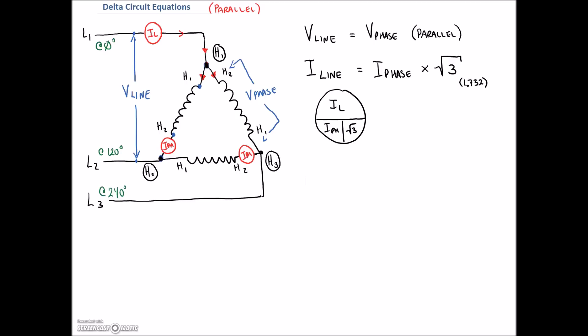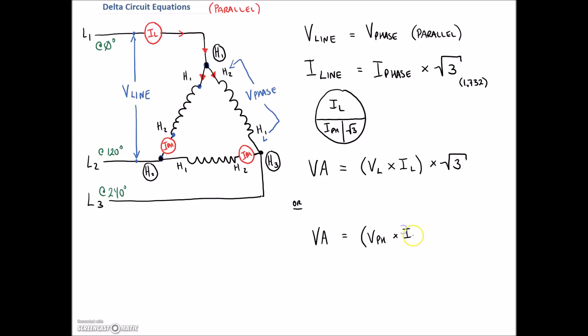Now we have voltage and current, so we need power. Power in three phases in terms of VA or volt-amps — there are two equations. First: VA equals V line times I line times root three, using the values on the outside of the circuit. Or: VA equals V phase times I phase times three, since we have three different phases and we multiply the single-phase power by three.